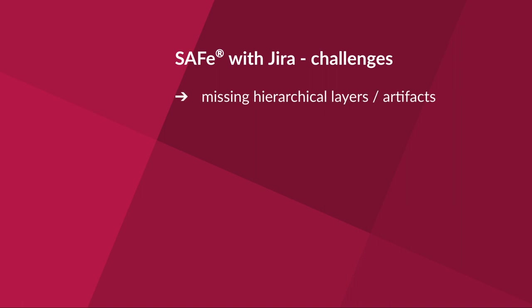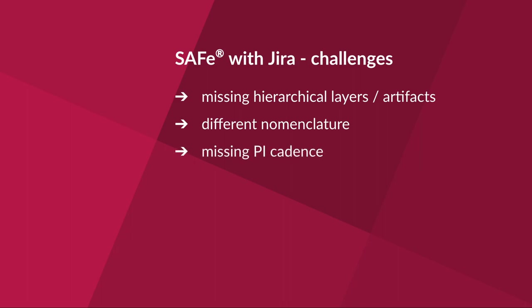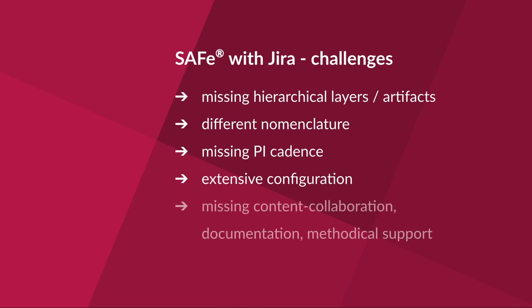You've got a limited hierarchy and missing SAFe artifacts. The names are just different from what you learn in a SAFe training — for example, the Epic. Setting up an aligned PI cadence can only be done with workarounds. SAFe is quite complex, and so is the individual configuration necessary. SAFe doesn't only ask for structures and processes, but also a lot of collaboration, documentation, and method expertise — and you sure don't want this amount of content in your Jira.